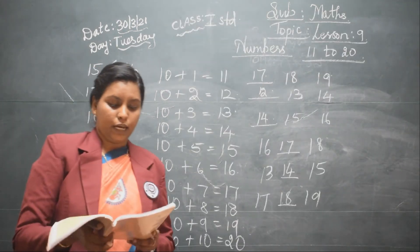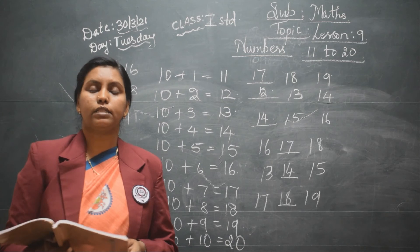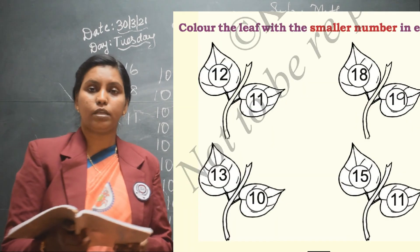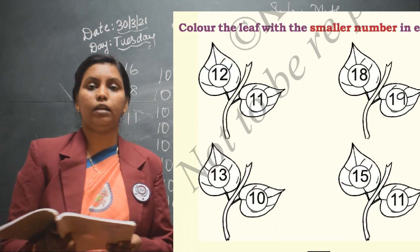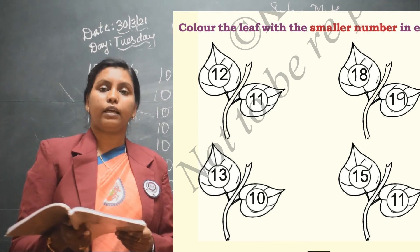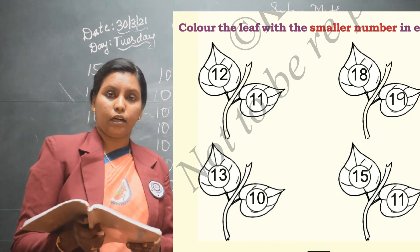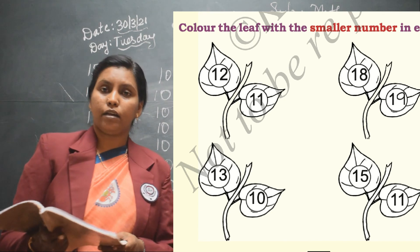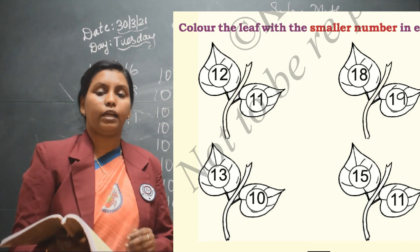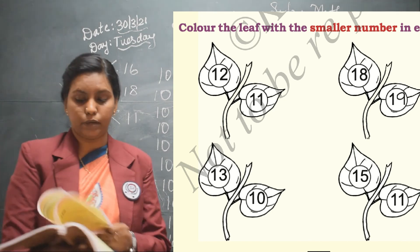Similarly, color the leaf with the smaller number. In the second activity they have given you the two numbers 11 and 12 — 11 is the smallest number. Then 18 and 19 — 18 is the smaller number. Then 13 and 10 — 10 is the smaller number. Then 15 and 11 — 11 is the smaller number.